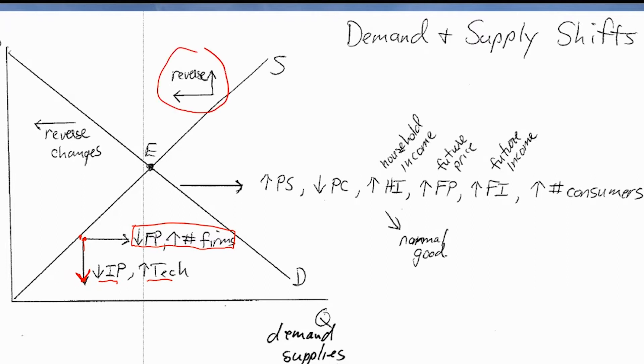Up here, it says reverse is going to move in the opposite direction. And that means an increase in input prices, changing what's below a decrease in technology - you lose knowledge somehow - an increase in future prices, and a decrease in the number of firms. So those are the reverse changes and those are going to cause the supply curve to shift left or upward depending on your inclination there.